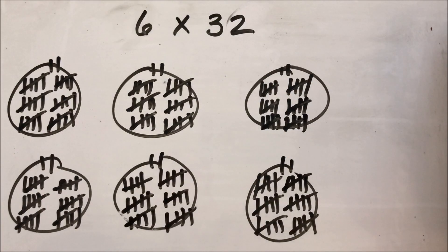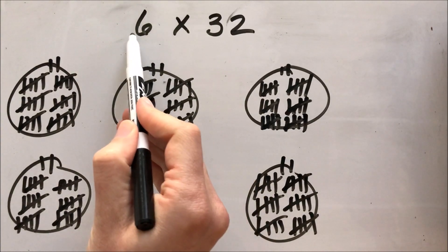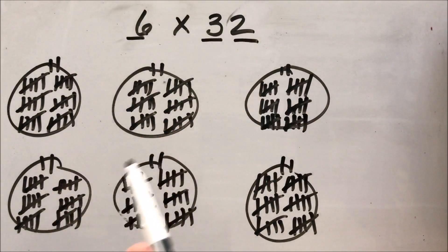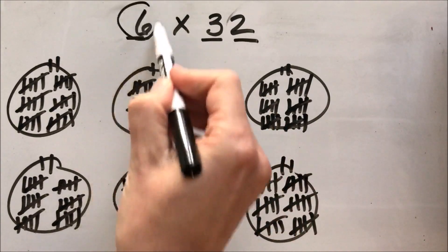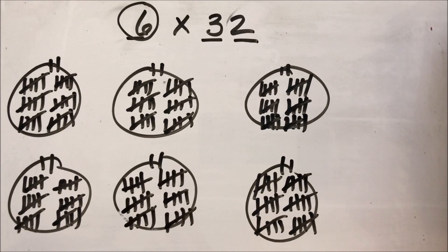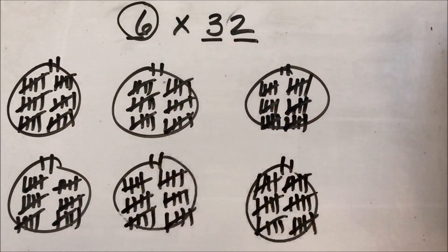Does this look like a mess to you? Because this looks like a mess to me. This is what happens when we use a strategy called equal groups to solve a problem that has a one-digit by a two-digit number. I found my smallest factor, six, and made six groups, then put 32 tallies in each group. If I counted really carefully I would get a correct answer, but chances are I'll probably count it wrong. So I want to use three different strategies this week to show you three different ways that you can solve a one-digit by two-digit multiplication problem.